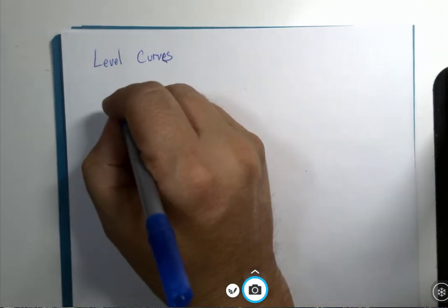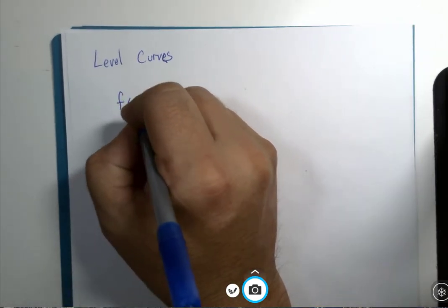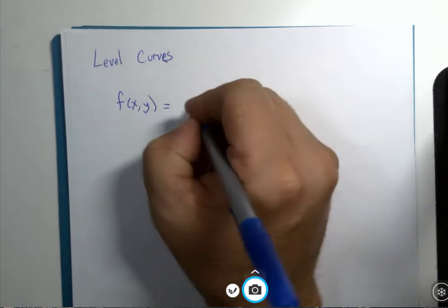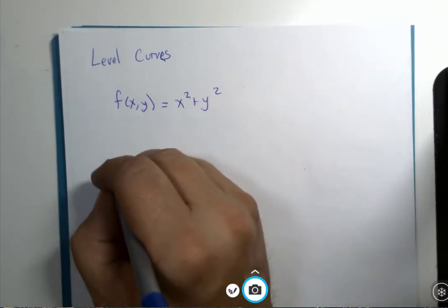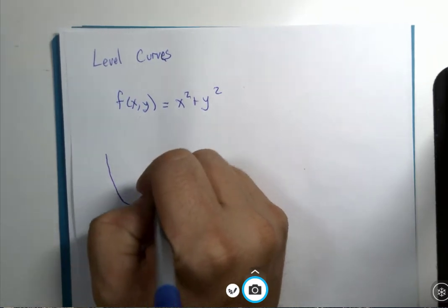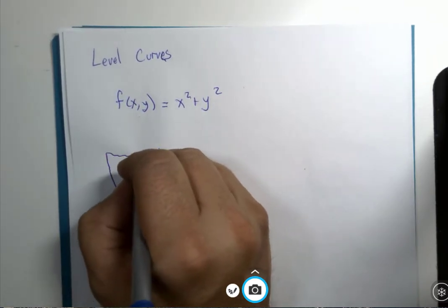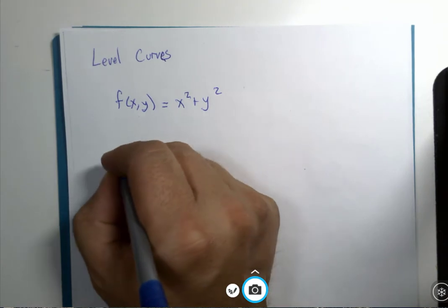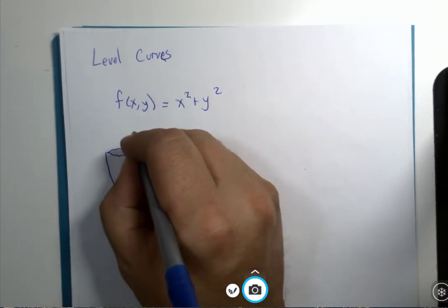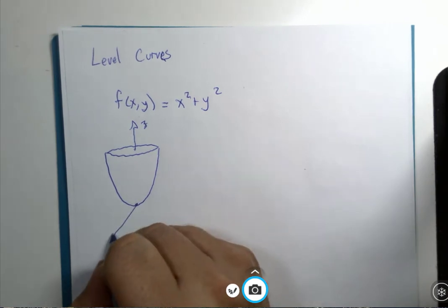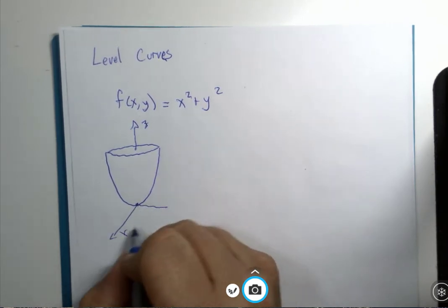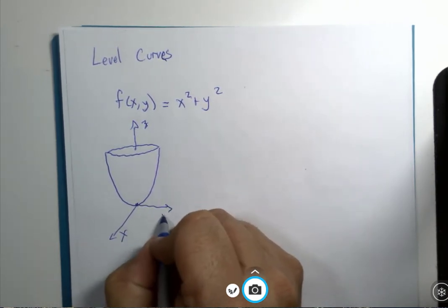If we were to look at the function f(x,y) equals x squared plus y squared, this is a paraboloid, and that's the z-axis and the x and y-axis.